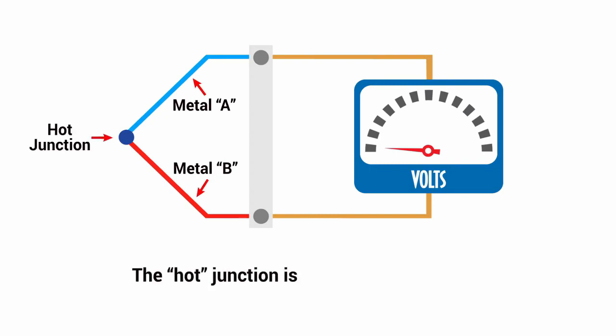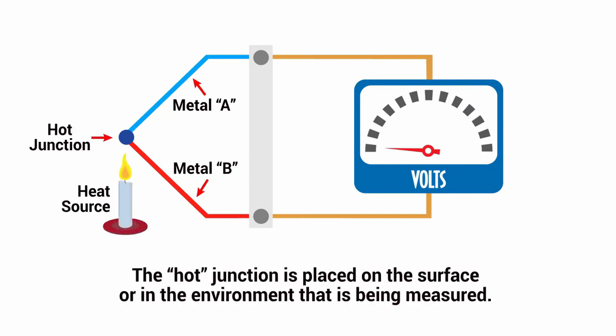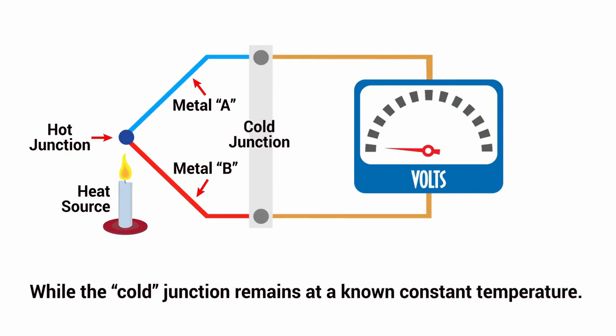The hot junction is placed on the surface or the environment that is being measured. When the cold junction remains at a known constant temperature, the change in temperature at the hot junction will create a temperature differential between the two junctions.